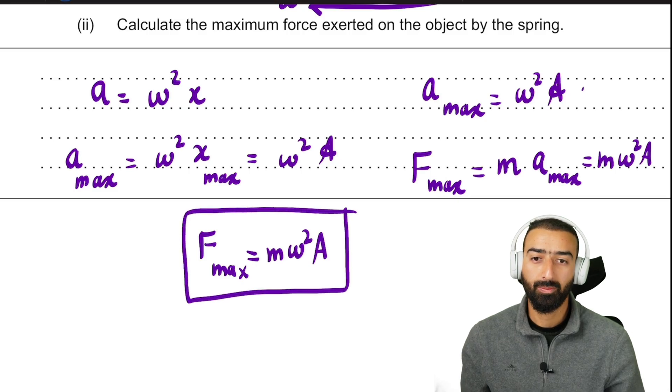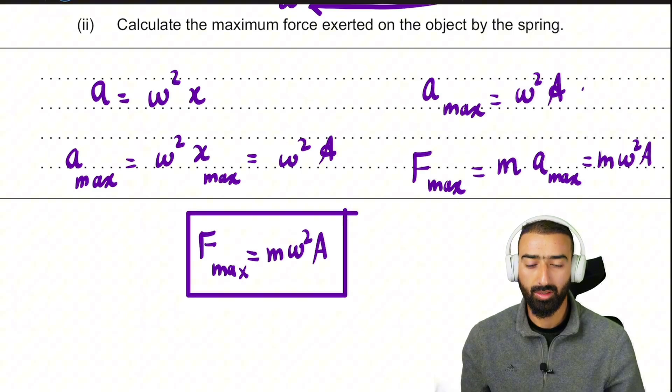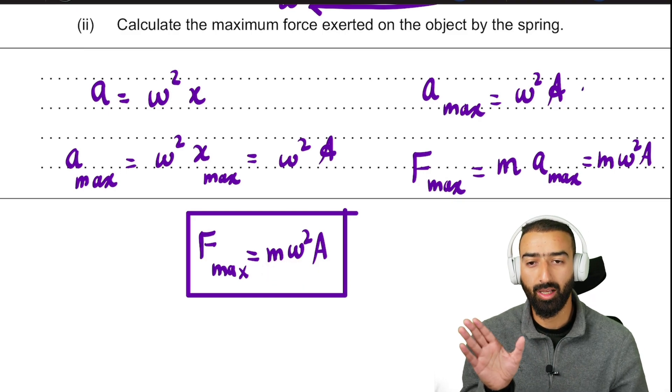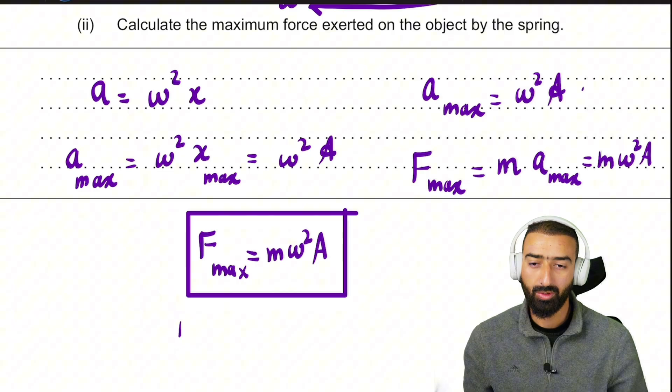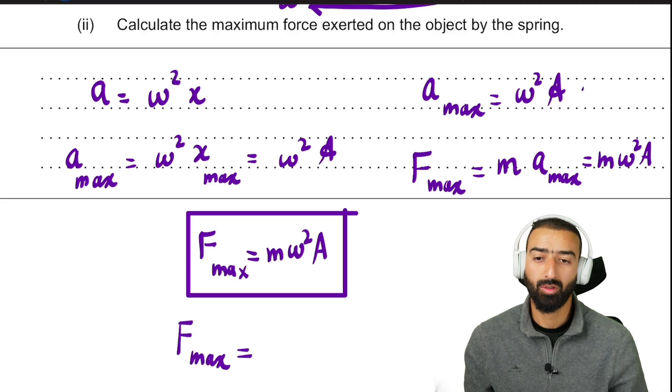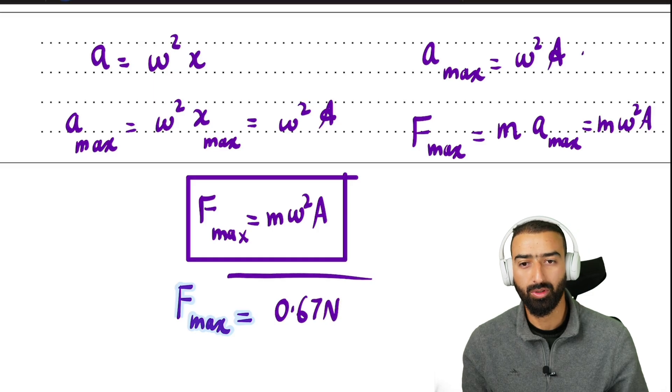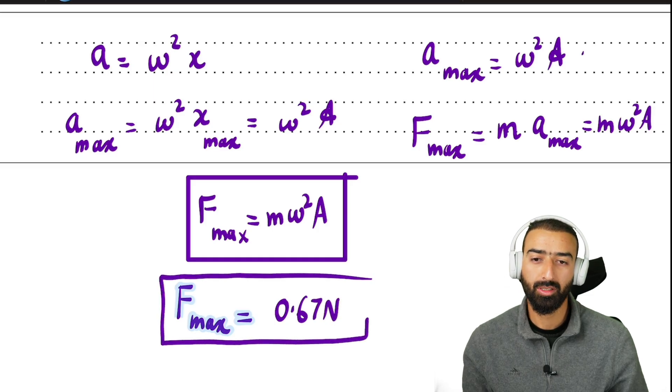All the variables in this equation are known to us. We know the mass, we know the omega, we know the amplitude. All we have to do is plug those values into this equation, which leads us to the maximum force of about 0.67 newtons. And that completes this problem.